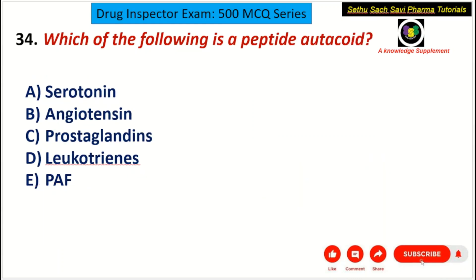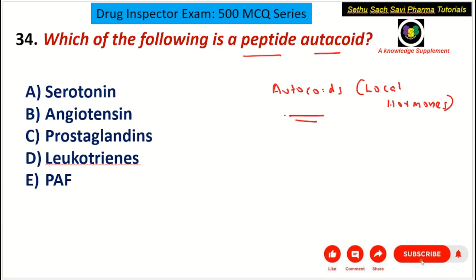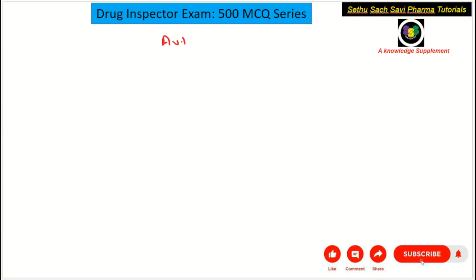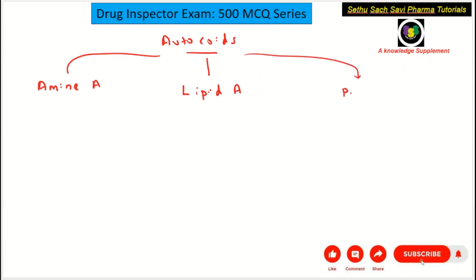Fourth question: which of the following is a peptide autacoid? Autacoids are also called local hormones; they are produced by specific cells in the body. Autacoids can be divided into three categories: amine autacoids, lipid autacoids, and peptide autacoids.